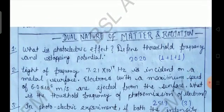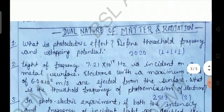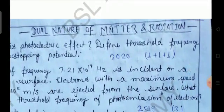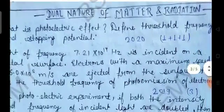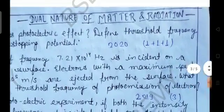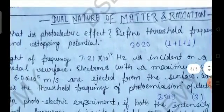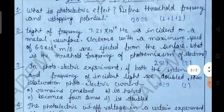Let's start with the first question. Question number one: What is the photoelectric effect? Define threshold frequency and stopping potential. The photoelectric effect is the most important topic of this chapter, so please understand its concept carefully and practice it multiple times. This question was asked in 2020. The marking scheme is 1 plus 1 plus 1 — one mark each for photoelectric effect, threshold frequency, and stopping potential.